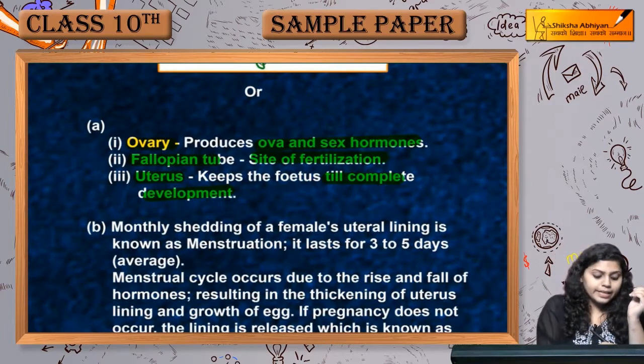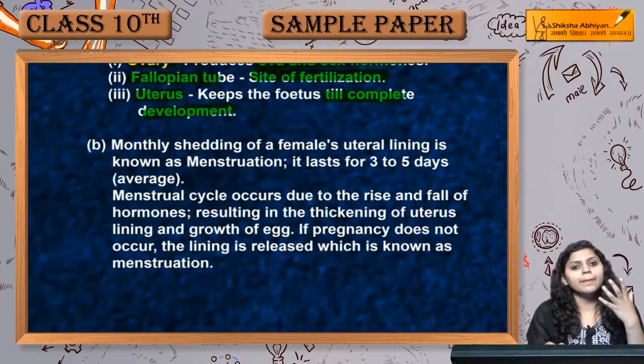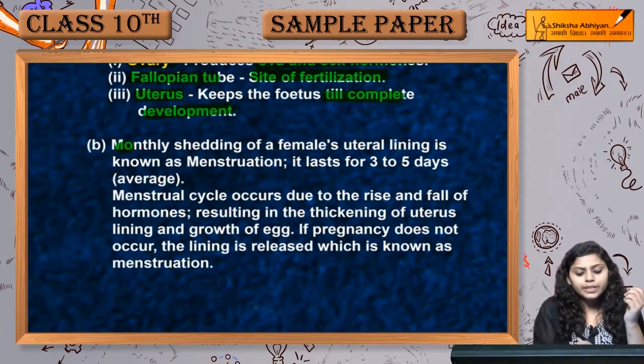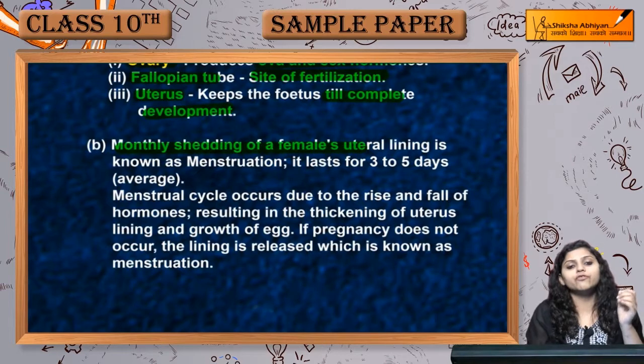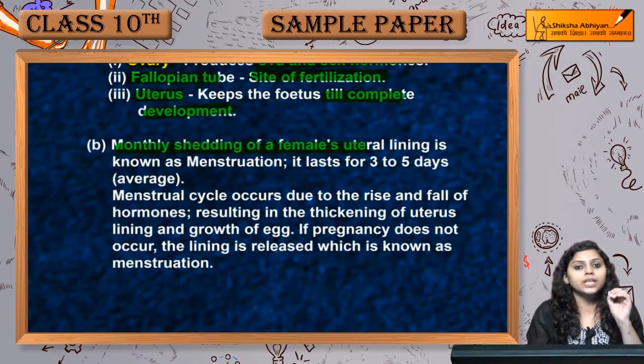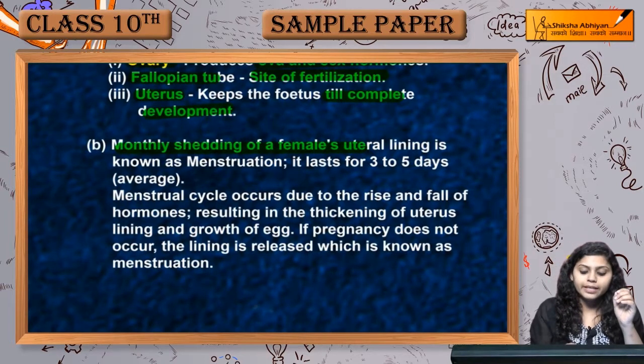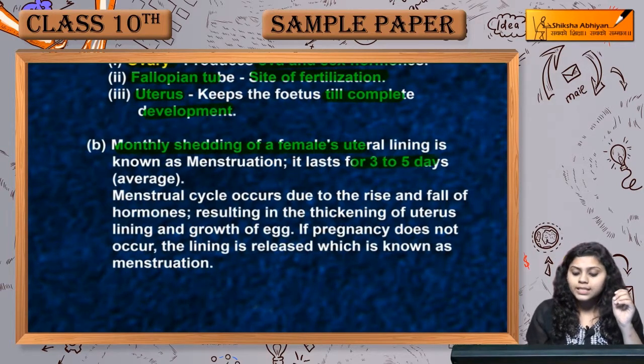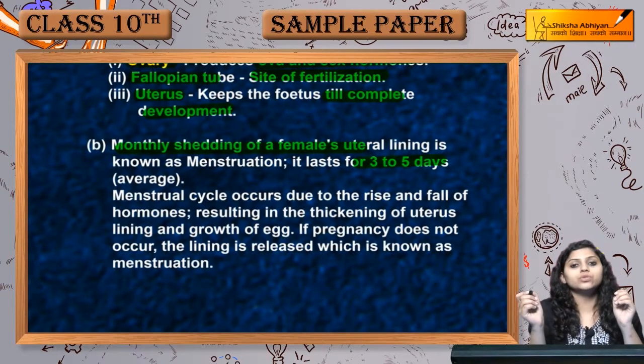Next is menstruation. Menstruation monthly shedding of the female uterine lining hoti hai, jo last karti hai for 3 to 5 days.